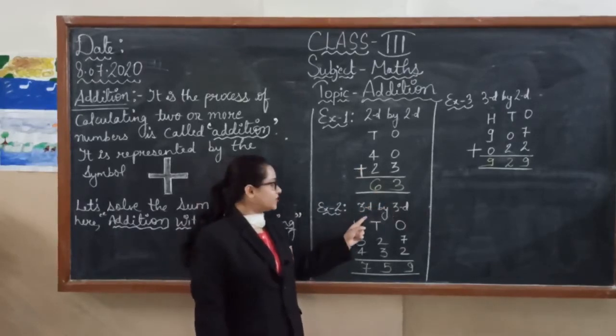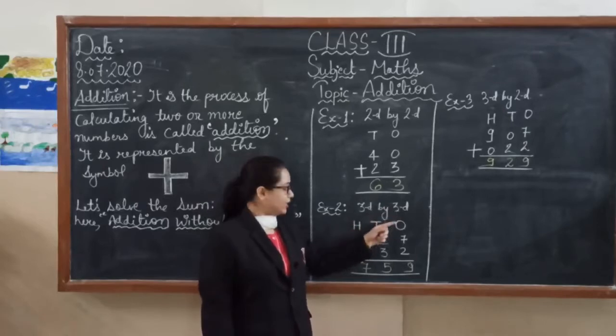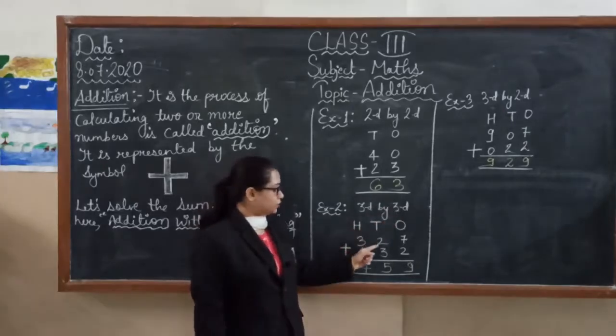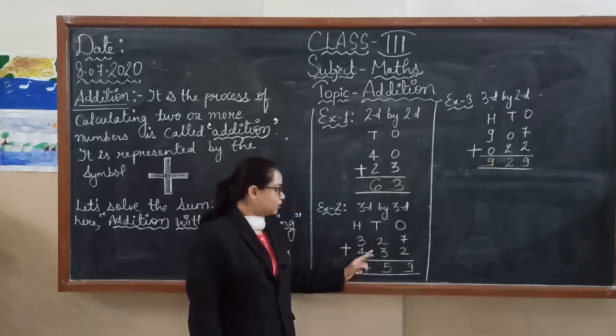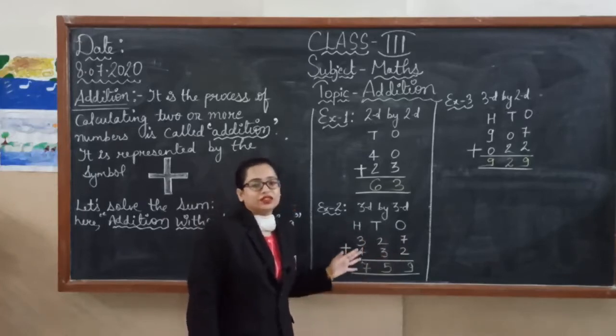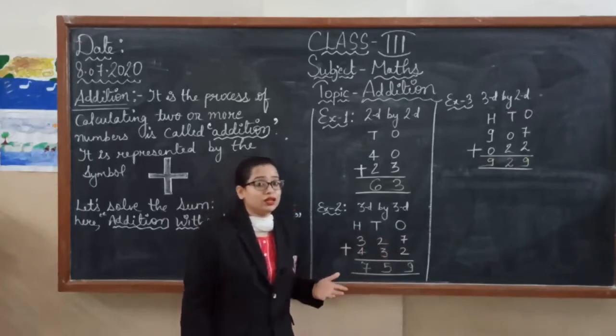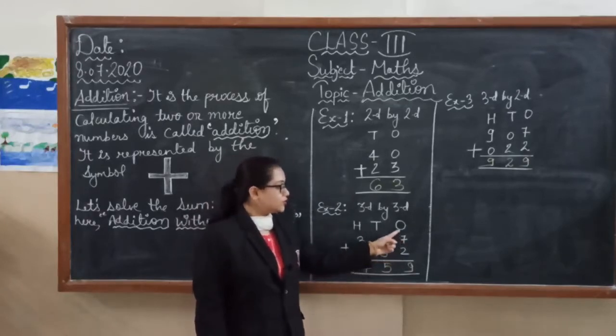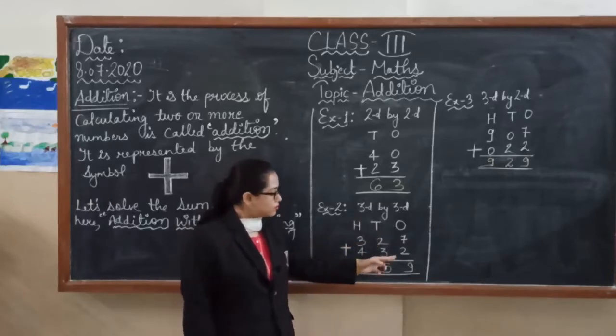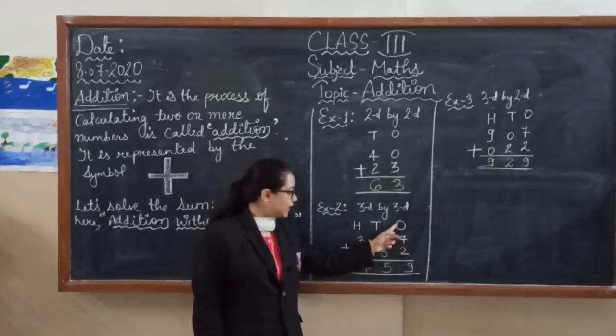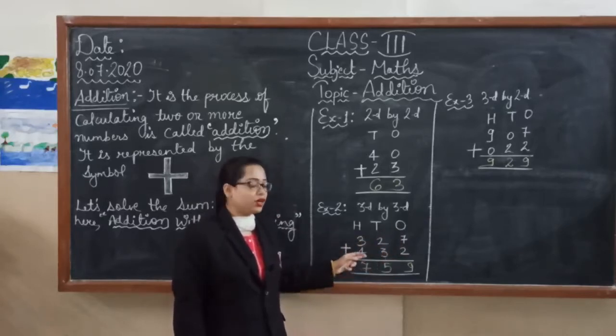Second example is three digit by three digit. Here you can see three, two, seven and next number four, three, two. These are all three digit numbers. We should know the place values of these numbers. Seven stands for one's place, two stands for ten's place and three stands for hundred place. Below, two stands for one's place, three stands for ten's place and four stands for hundred place.